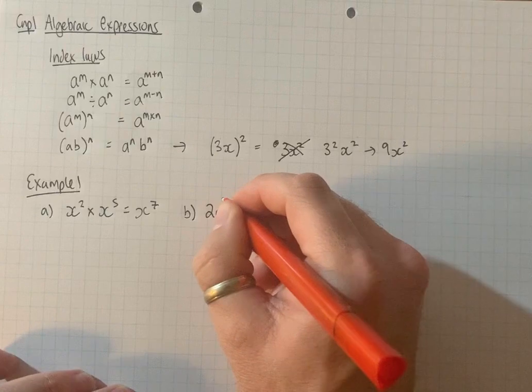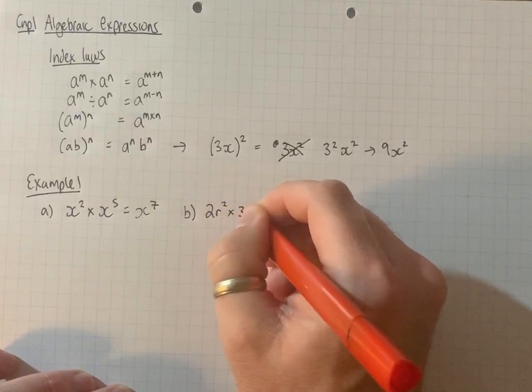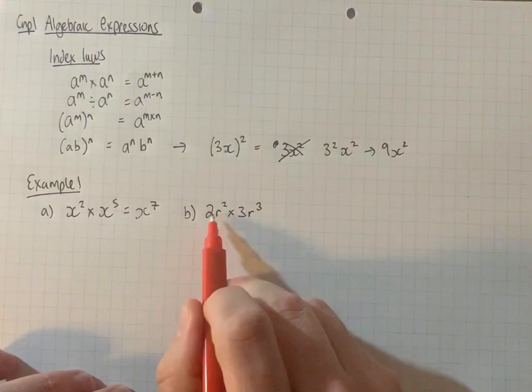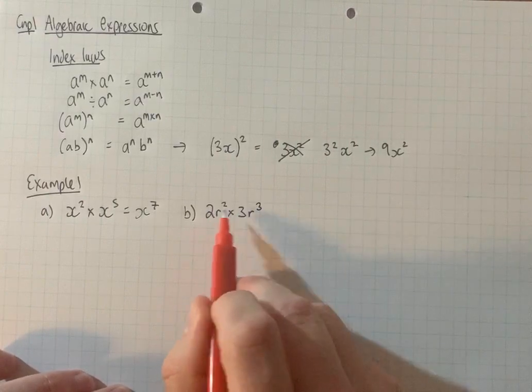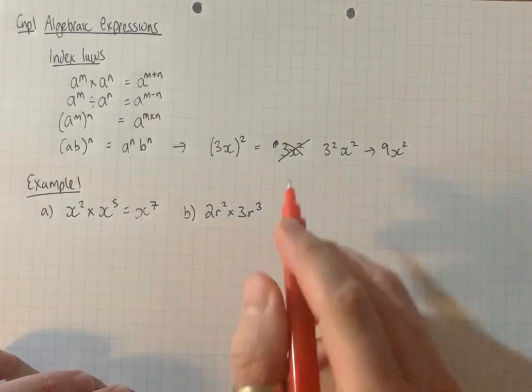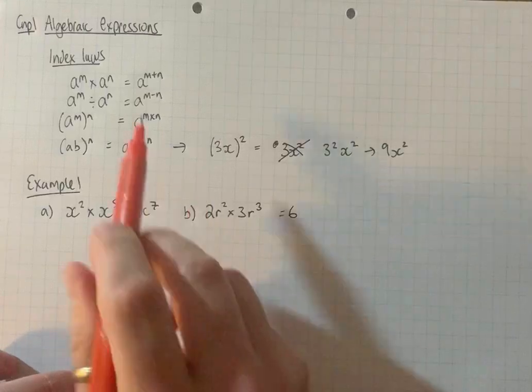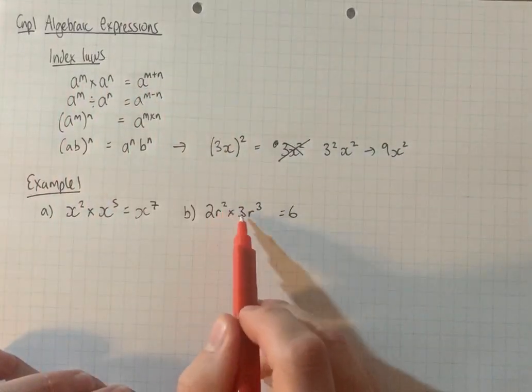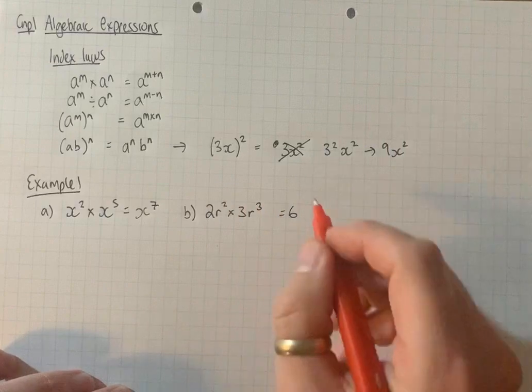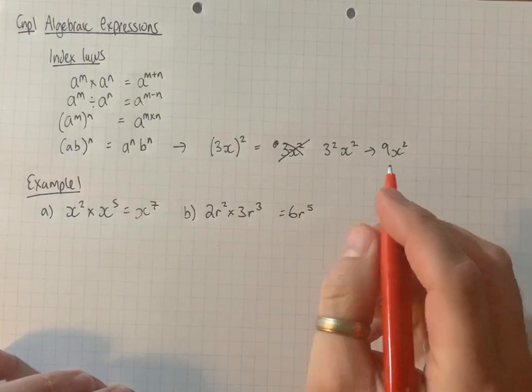2r squared times 3r cubed. Let's do the coefficients first. When we're multiplying those together, 2 times 3 is 6. And then from the multiplication rule here, r squared times r cubed, add the powers together, r to the 5.